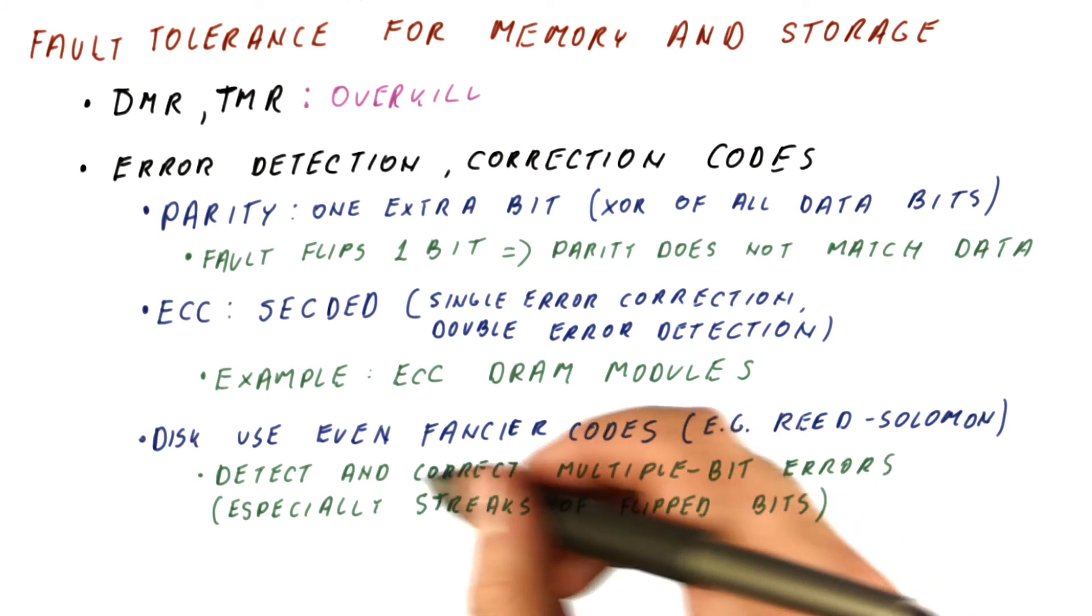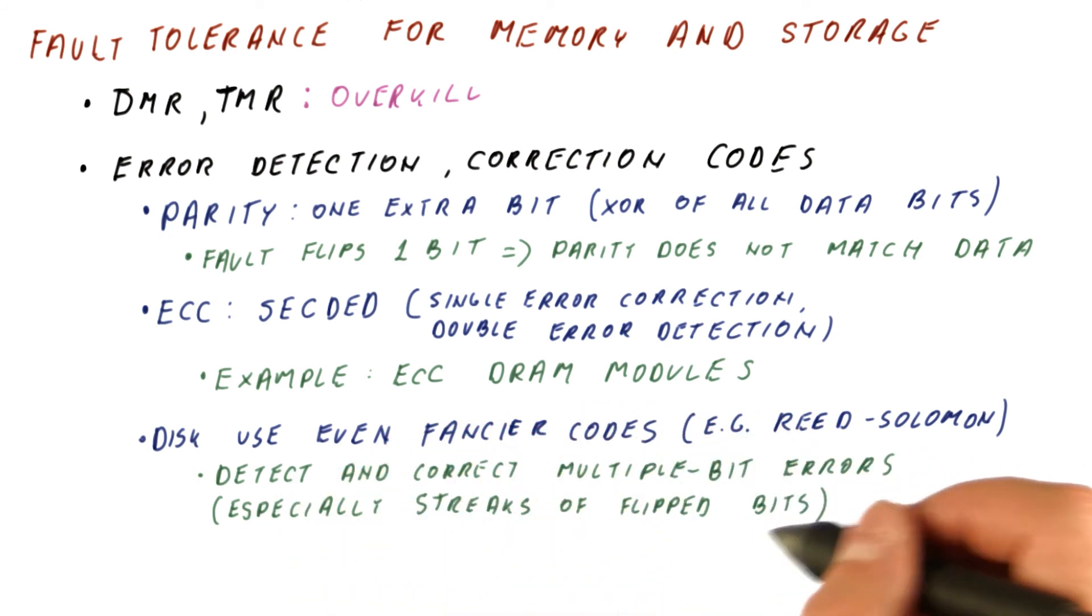They're especially powerful when we have a streak of flipped bits, which happens, for example, when the head oscillates a little bit and while the disk is spinning, it for a while is too high above the platter and misses some of the bits.